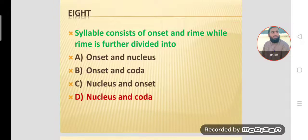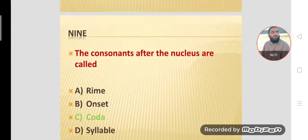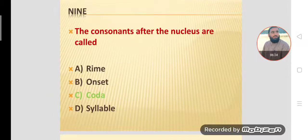MCQ number eight: A syllable consists of onset and rhyme. The onset is the beginning, and the rhyme position is further divided into the nucleus and the coda. The nucleus holds the vowel sound, and the coda holds the consonants that follow. MCQ number nine: The consonants after the nucleus are called the coda.